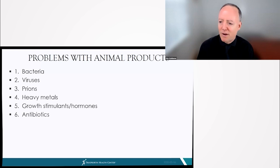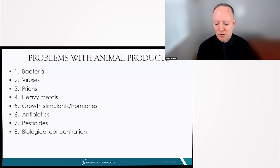Antibiotics, most antibiotics that are produced are actually fed to animals, allowing them to grow antibiotic-resistant organisms that are passed on to us. Pesticides, both sprayed on their feed as well as given to the animals directly. And this whole idea of biological concentration.